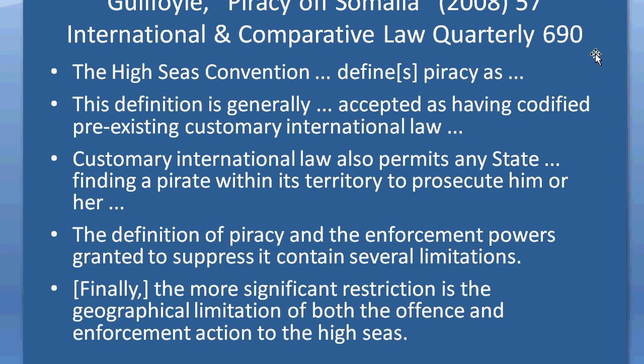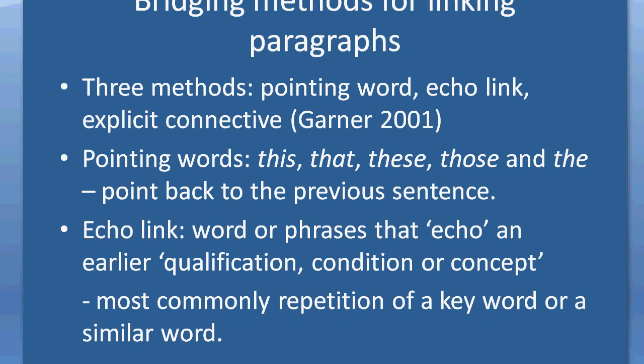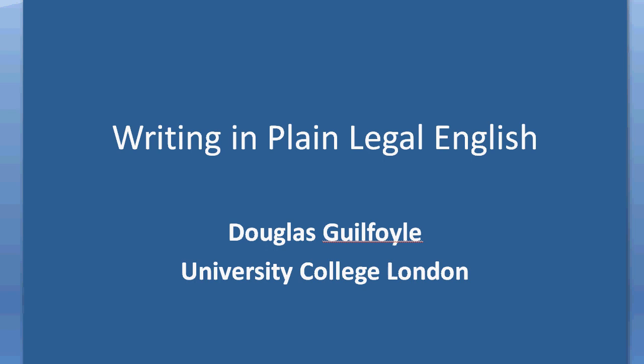What I suggest you do is go away and look at a piece of legal writing that you think is a good, clear piece of writing, and try to tease apart how these ideas are being used — how the author uses pointing words, echo links, or explicit connectives. Can you see other words that could be used as explicit connectives in your own writing? Building up your own lists can be a useful practice for developing this concept of bridging between paragraphs. That's all I wanted to talk about in this screencast. Thanks for your attention. Hope you tune in to the next one.